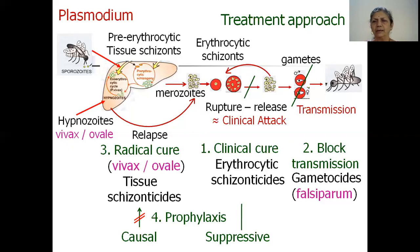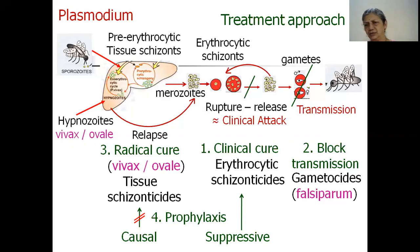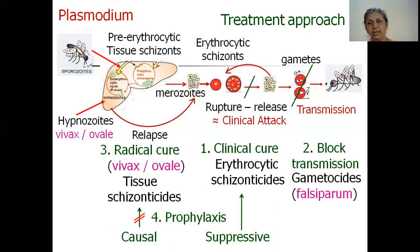Instead, suppressive prophylaxis is used: erythrocytic schizonticides are started before the traveller goes to the endemic area, continued throughout the stay, and for a few weeks afterward. Even if the person gets infected and the parasite reaches the erythrocytes, the clinical attack will not occur because the erythrocytic schizonts are killed inside the RBCs before they can be released into the bloodstream. This suppressive prophylaxis approach is what we use to protect a traveller going into endemic areas for months or even years.